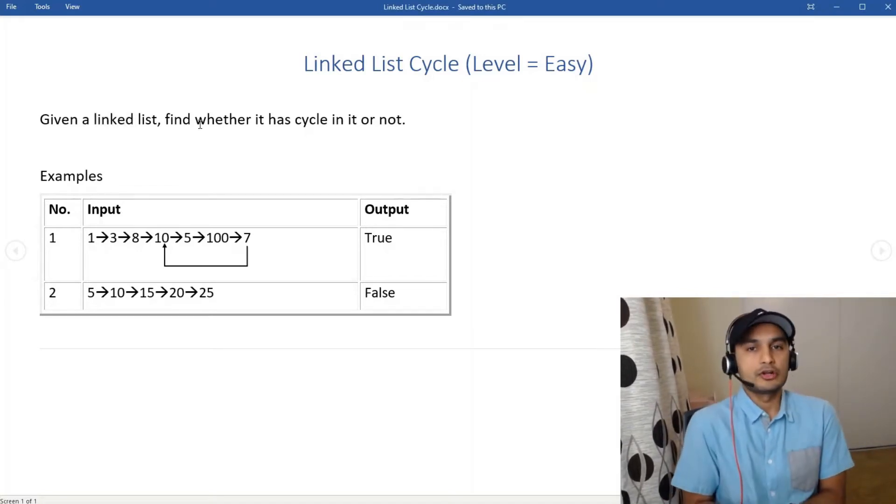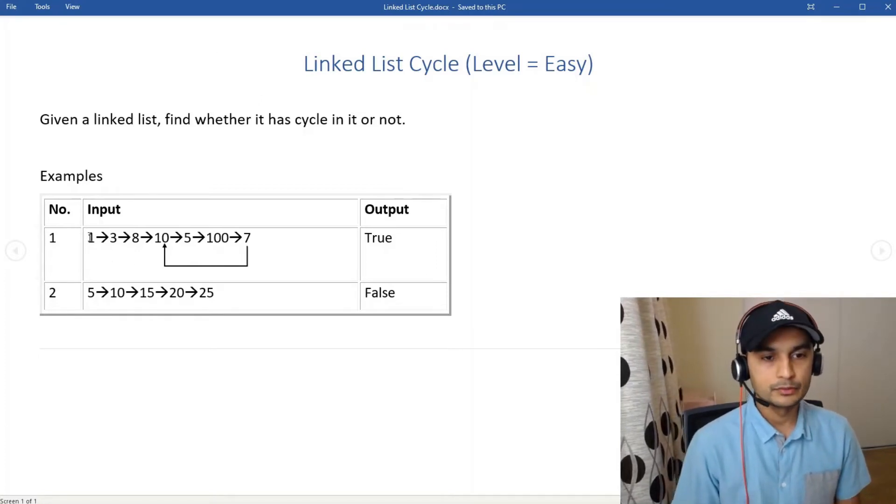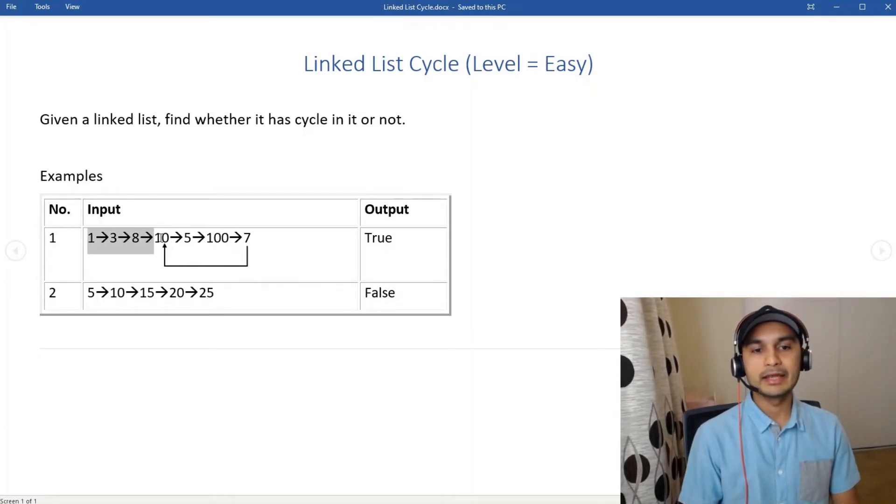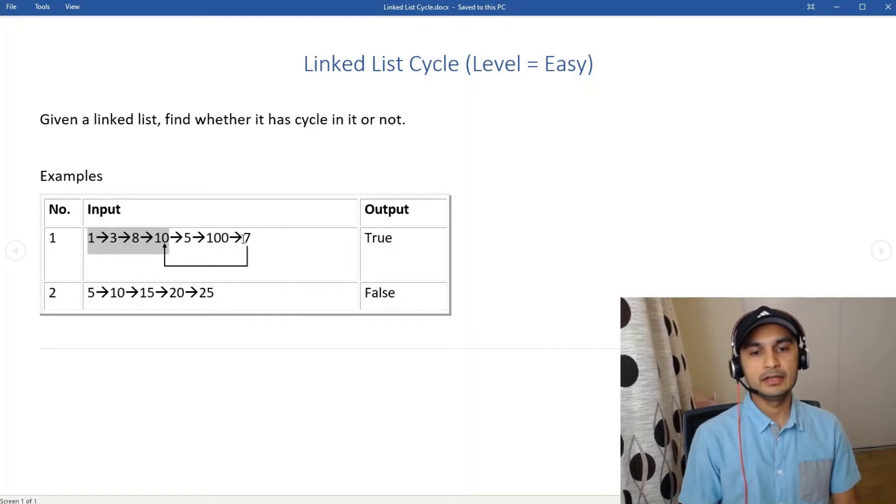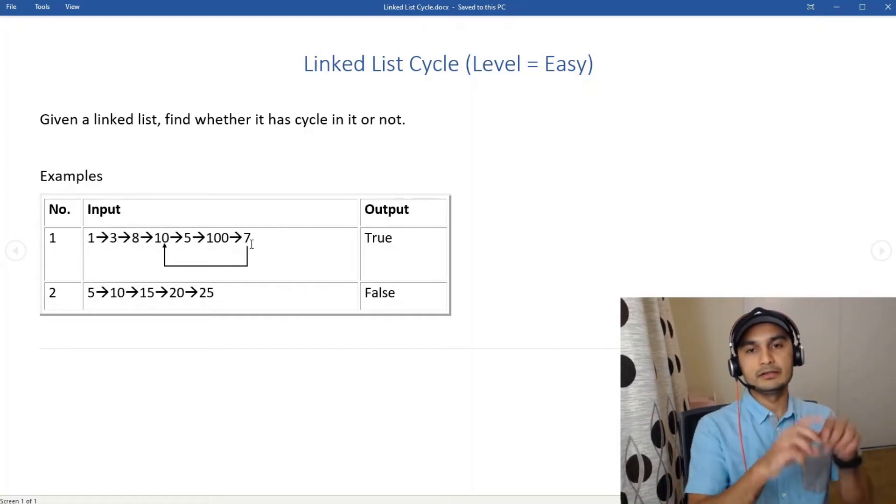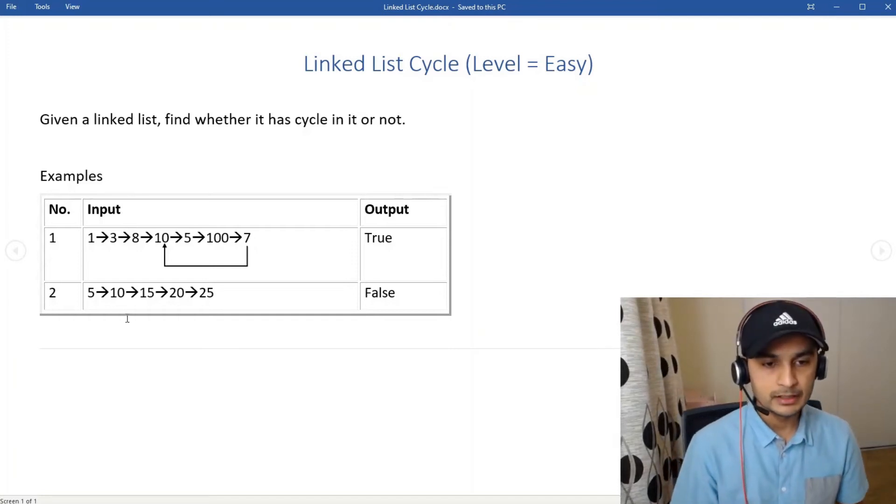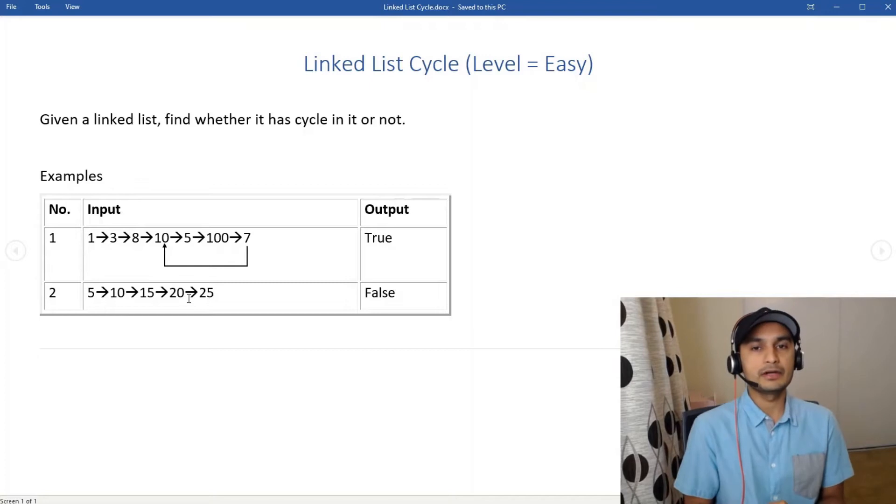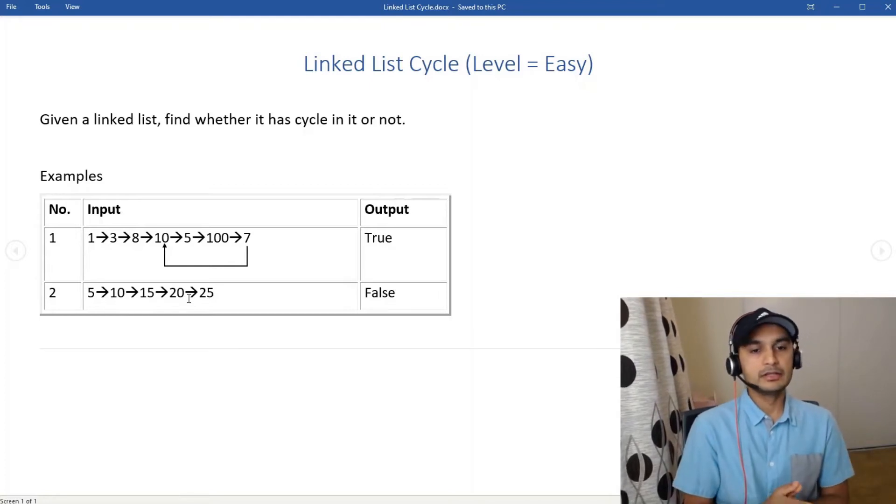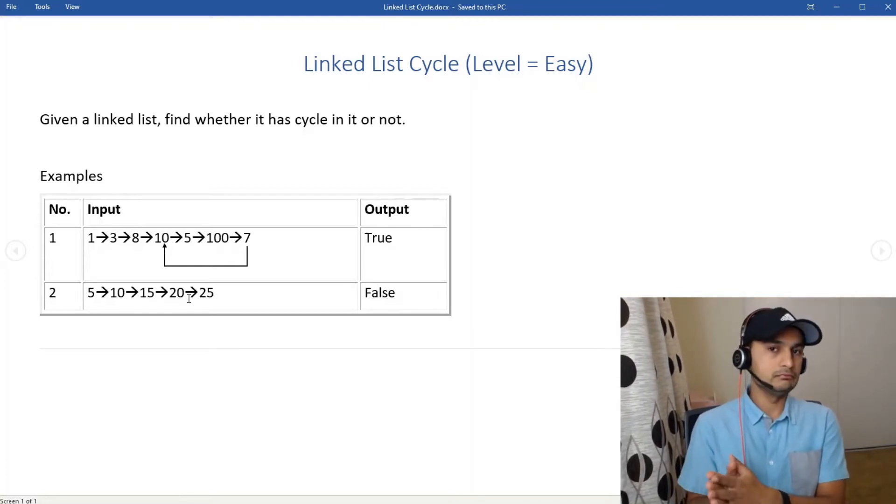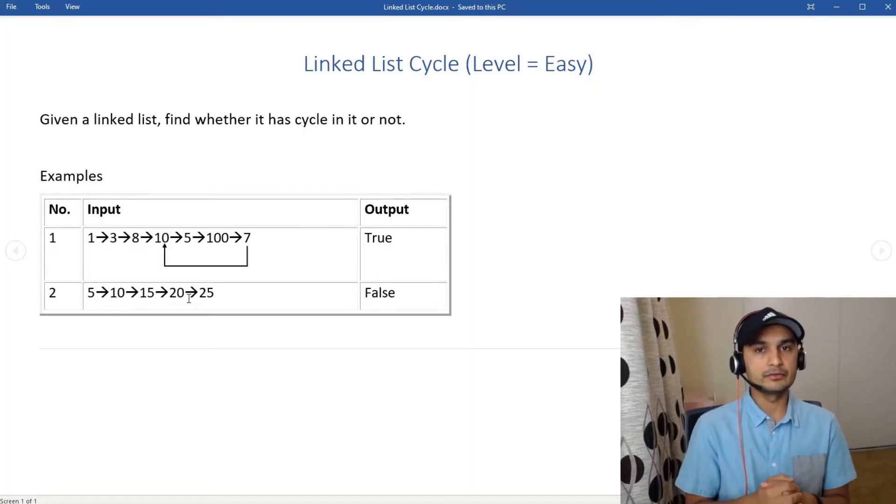Let's look at the examples. Our first linked list is 1, 3, 8, 10, 507, and then 7 points back to 10, so obviously it has a cycle and we return true. Our second example is 5, 10, 15, 20, 25. It's a simple linked list where 25 points to null, so it doesn't have a cycle, so return false.